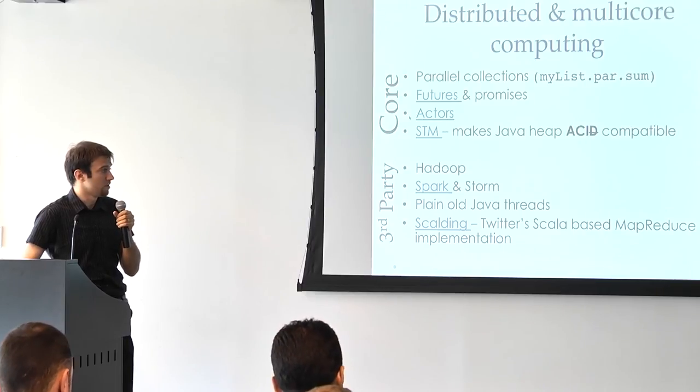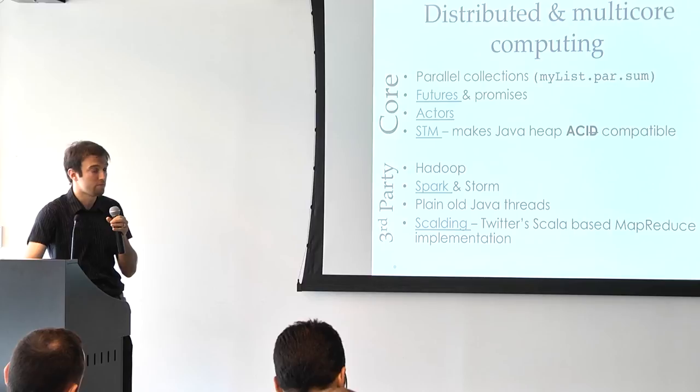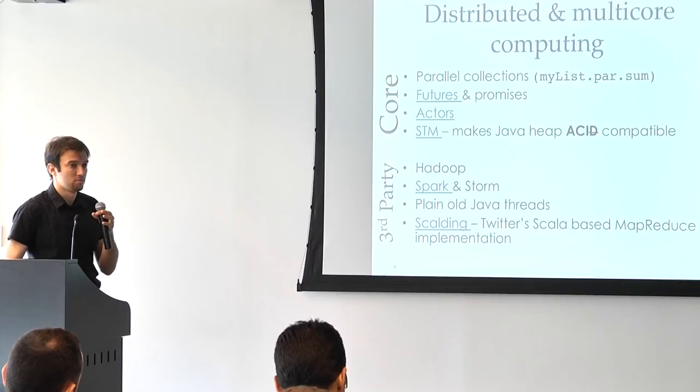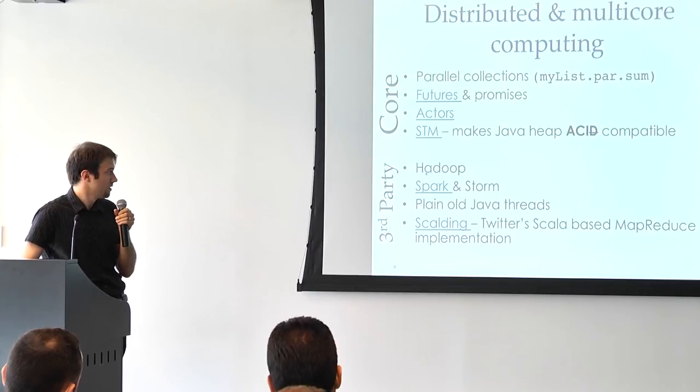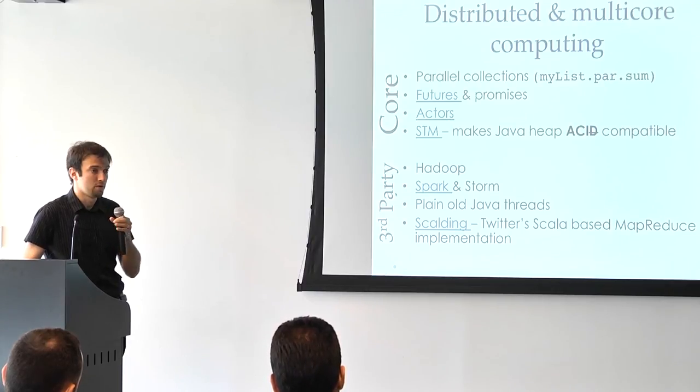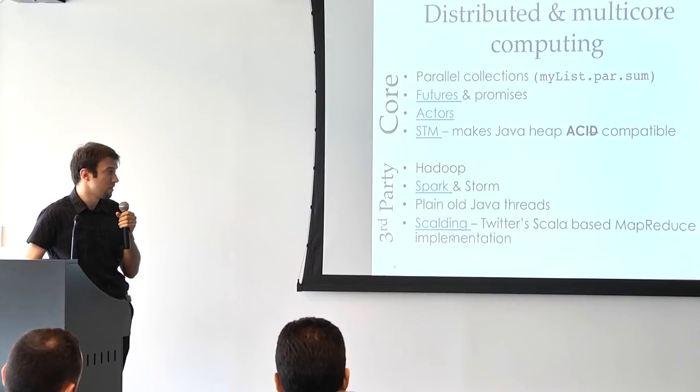We have futures and promises as part of the language, starting from 2.10. Part of the standard library, in fact. Actors is something that we get from the ACCA framework, which is now part of the type-safe stack, together with play and slick. And it also brings us the software and transactional memory, which is also a part of closure. And it was actually inspired by it as well. And obviously, we can use all the third-party tools that are available for the JVM community, such as Hadoop, Spark, and Storm. Spark is actually Scala-based. We can still use the plain old Java threads, but it's not very tempting. Twitter wrote their own implementation on top of cascading and called it scalding. That's all.